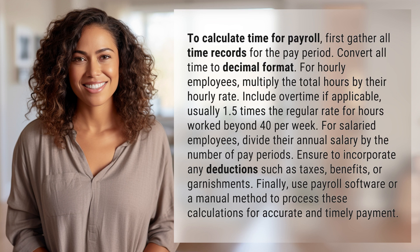Include overtime if applicable, usually 1.5 times the regular rate for hours worked beyond 40 per week. For salaried employees, divide their annual salary by the number of pay periods.